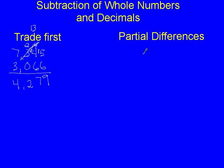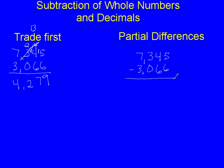Now we're going to do the same numbers — 7,345 subtract 3,066 — just with a different strategy: partial differences. Instead of working from right to left, we're actually going to go from left to right, and it's done by place value.